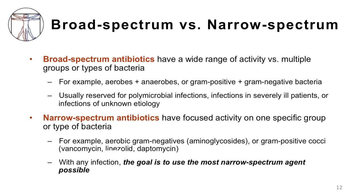Now let's cover broad spectrum versus narrow spectrum therapy. Broad spectrum antibiotics have a wide range of activity versus multiple types or multiple groups of bacteria. For example, a particular broad spectrum antibiotic might cover both aerobes and anaerobes, or have activity against both gram-positive and gram-negative pathogens. This type of therapy is usually reserved for polymicrobial infections, infections in severely ill patients such as those in the intensive care unit, or infections of unknown etiology.